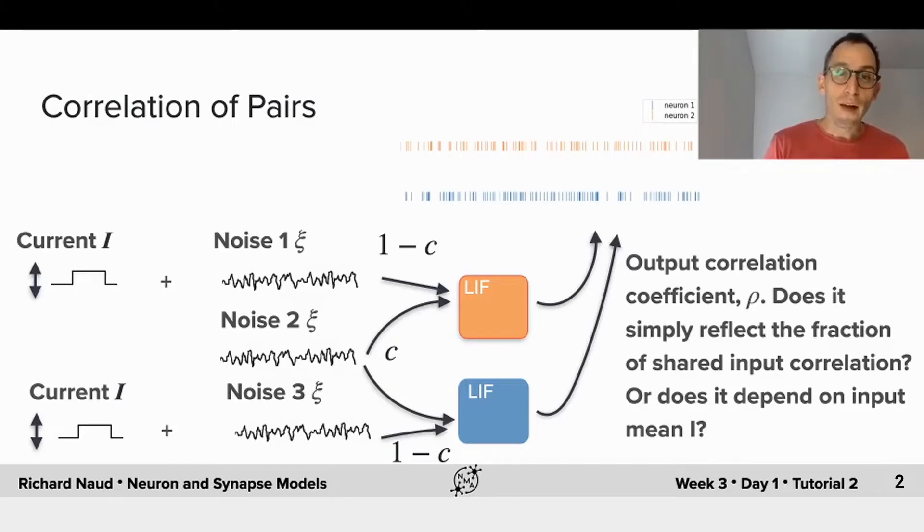Two output spike trains can be correlated or not even if they have the same mean. To study this we will inject a current that has some amplitude I into two leaky integrate and fire models. Each of these leaky integrate and fire models has its private noise - noise 1 for this orange neuron and noise 3 for this blue neuron - but they also receive a common source of noise.